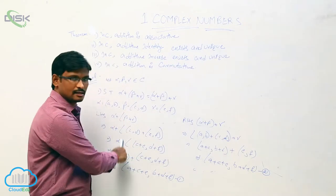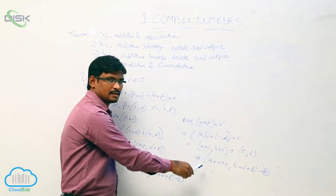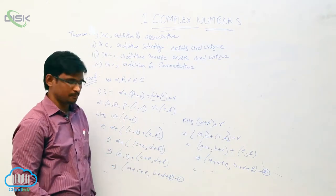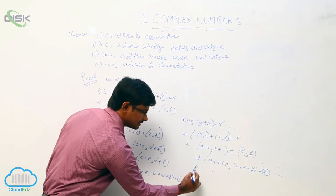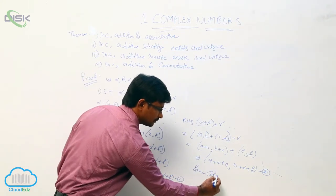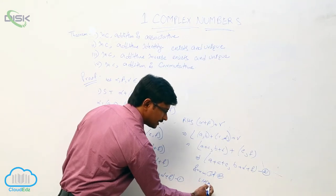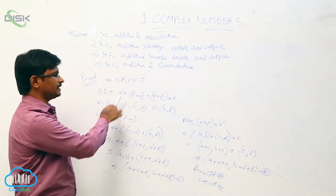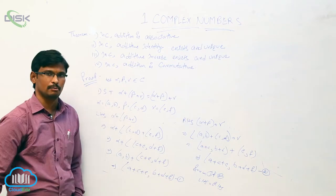Observe both equation one and two — both are the same. So clearly we can say that from one and two, LHS equals RHS, which means addition is associative in complex numbers.